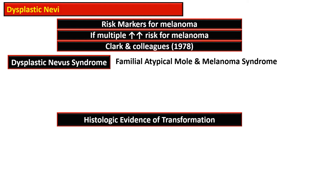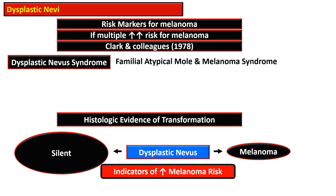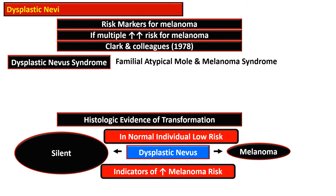There is presence of histologic evidence of transformation, but most dysplastic nevi remain silent and do not transform into malignancy. Some do transform, however. Importantly, not all melanomas arise from dysplastic nevi, so these dysplastic nevi are considered as indicators of increased melanoma risk.